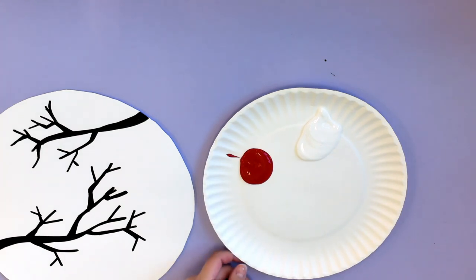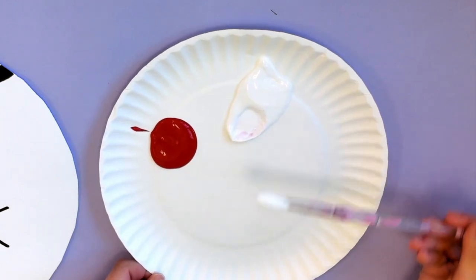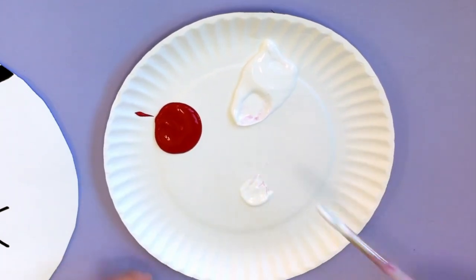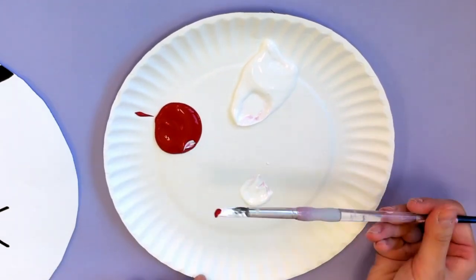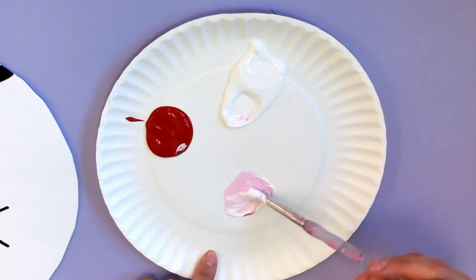And for the very first color, what I'm going to do is I'm going to pick up a big scoop of white and move it onto a different part of my plate. I'm going to pick up a little dot of red, mix that in. And this is going to be the lightest tint of pink that we use for our cherry blossoms.